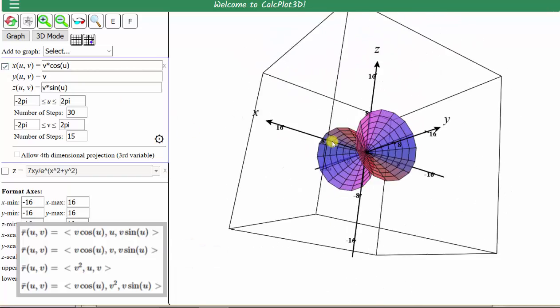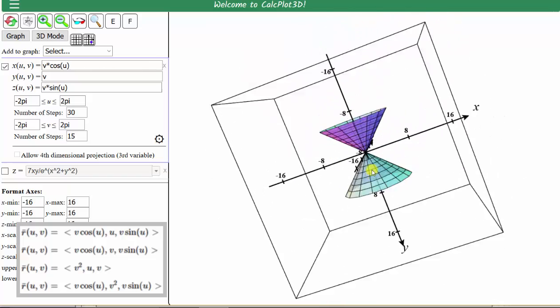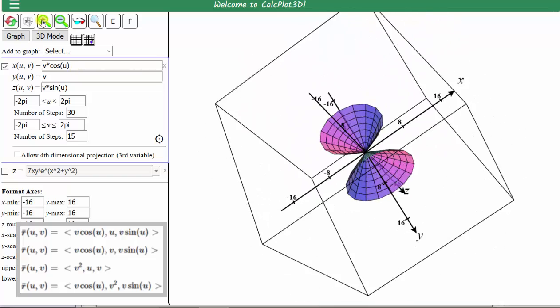Notice now we have a cone. And again, we can zoom in or zoom out using these two buttons here.